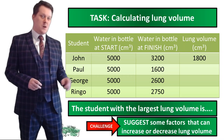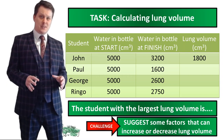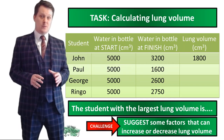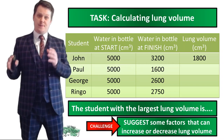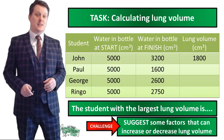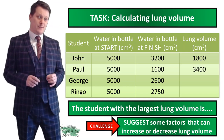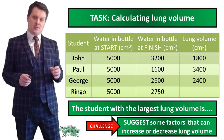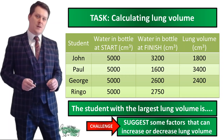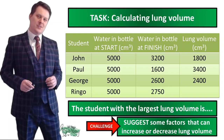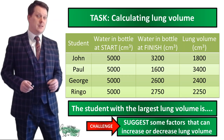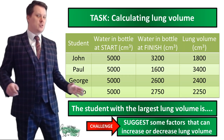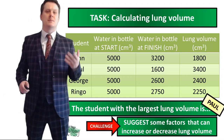Paul starts with 5,000 cm³ and finishes with 1,600 cm³, so 5,000 minus 1,600 gives 3,400. For George, 5,000 minus 2,600 gives 2,400. For Ringo, 5,000 minus 2,750 gives 2,250. The student with the largest lung volume is Paul.